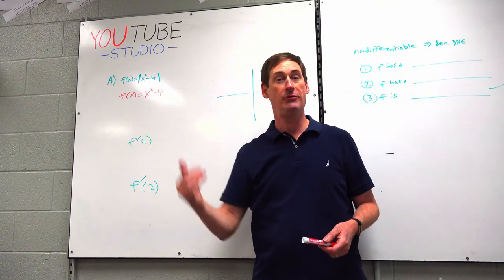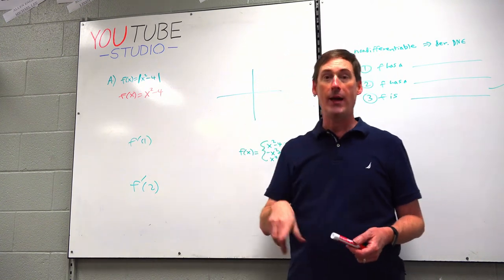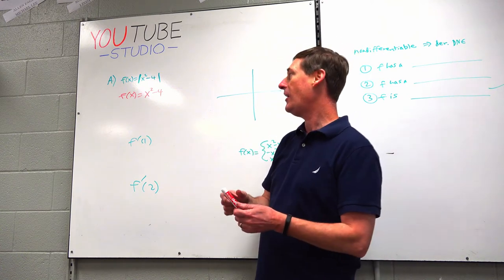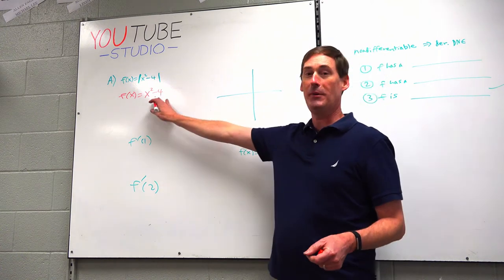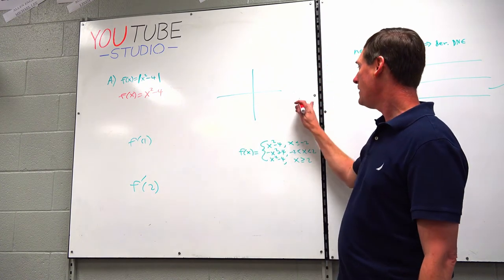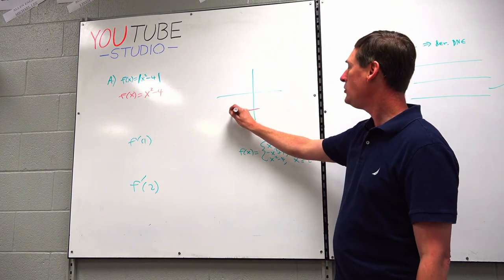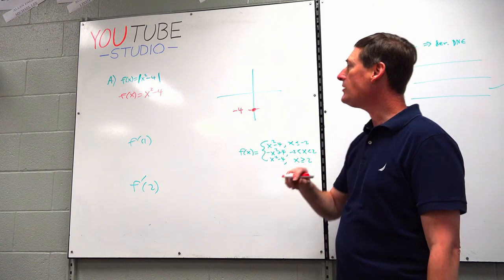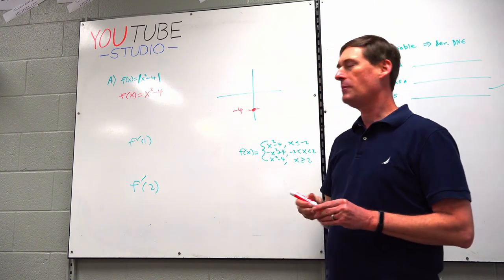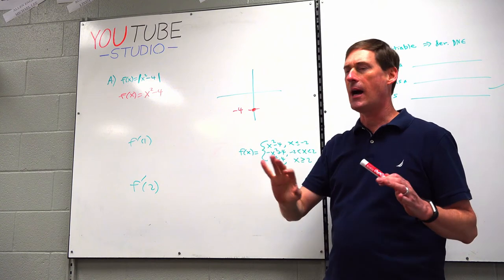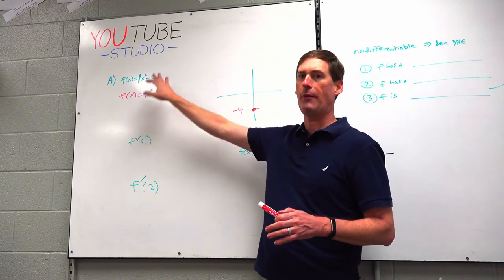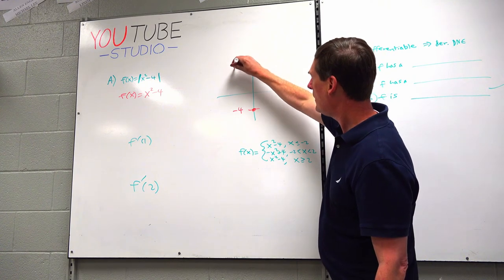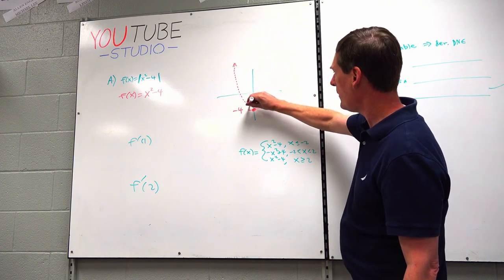Step one: consider just the normal regular equation F of X equals X squared minus 4 without the bars, because you all know what that is. Every person who gets to calculus knows how to graph X squared minus 4. It's a parabola shifted down 4. So let's draw this with some dashed lines — not solid, because it's not the graph we're trying to graph. We're trying to graph the absolute value.